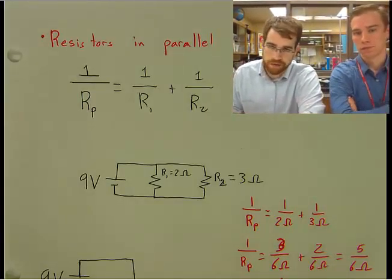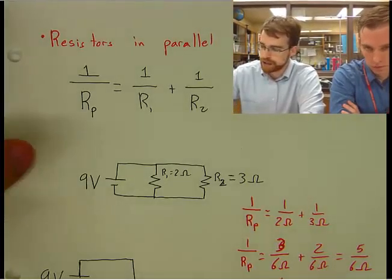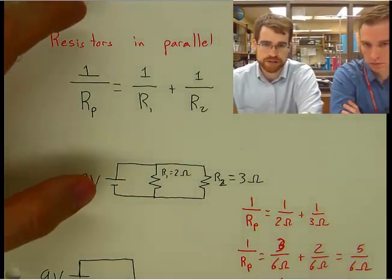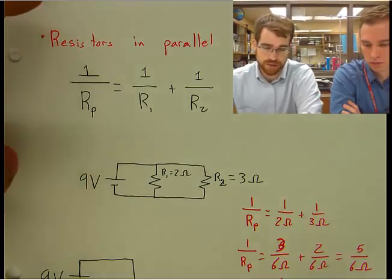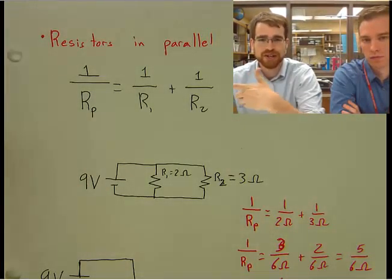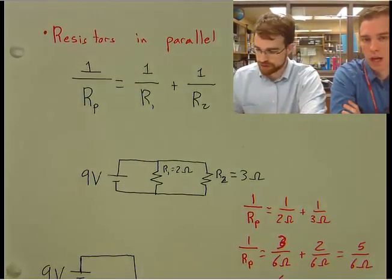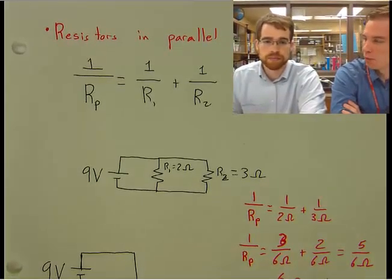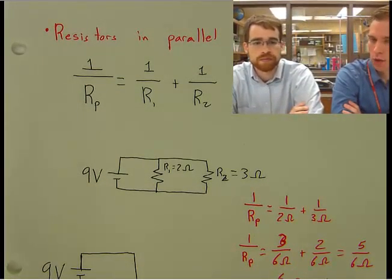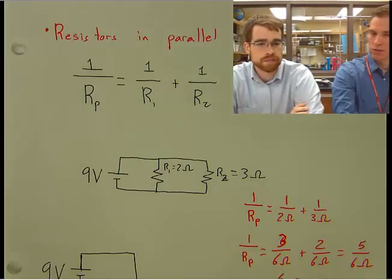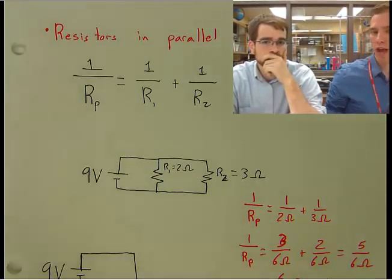So we have to obviously have a different equation. And so our equation is 1 over the total resistance equals 1 over the first resistor plus 1 over the second resistor. And so this is actually a lot more challenging of a problem because you have to take the reciprocal, add them together, and then take the reciprocal of that.